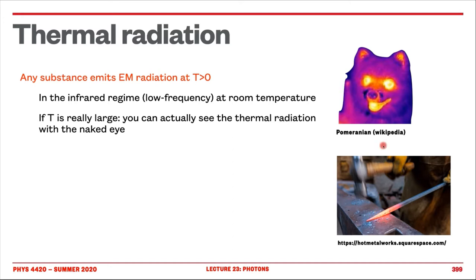In this case, the temperature is low, therefore we have low energy radiation like infrared. And when the temperature is higher, we start to see higher frequencies, for example in the red, which start to be visible. So today what we are going to do is to really understand quantitatively what's the relationship between the temperature of an object and the frequency at which it's most likely to emit.